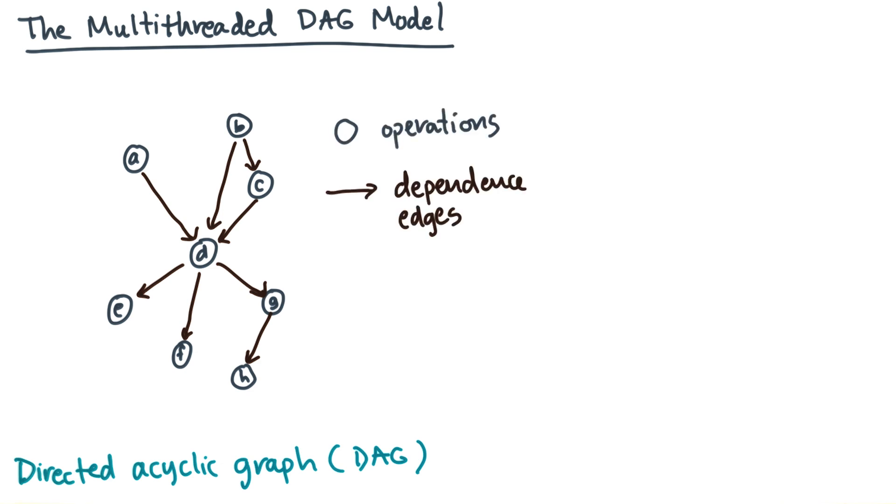Each vertex is an operation, like a plus, or an addition, or a function call, or a branch.